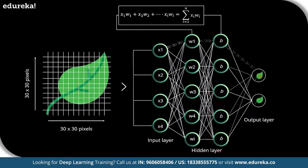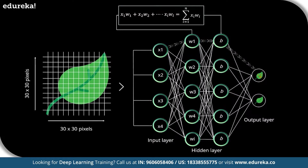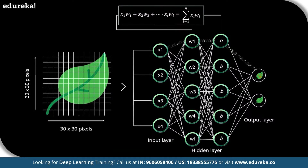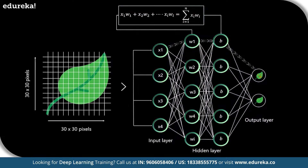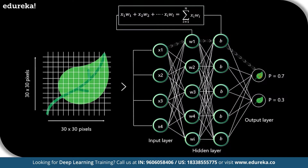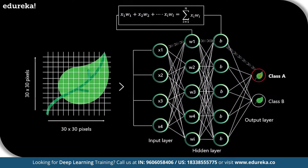An activated perceptron is used to transmit data to the next layer. In this manner, the data is propagated forward through the neural network until the perceptrons reach the output layer. At the output layer, a probability is derived which decides whether the data belongs to class A or class B.